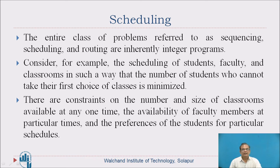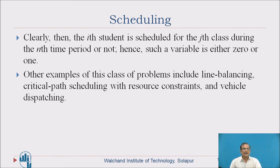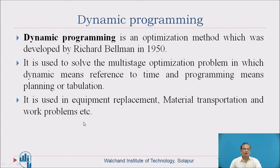The entire class of problems referred to as sequencing, scheduling, and routing are inherently integer programs. Consider the example of scheduling students, faculty, and classrooms such that the number of students who cannot take their first choice of classes is minimized. There are constraints on the number and size of classrooms available, the availability of faculty members at particular times, and the preferences of students for particular schedules. The variable for whether the ith student is scheduled for the jth class during the nth time period is either 0 or 1. Other examples include line balancing, critical path scheduling with resource constraints, and vehicle dispatching.